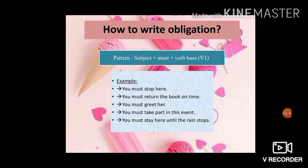Perhatikan pattern atau pola kalimat berikut ini: subject plus must plus verb being or verb one. For example: you must stop here. You must return the book on time. You must greet her. You must take part in this event. You must stay here until the rain stops.